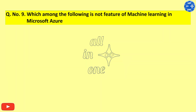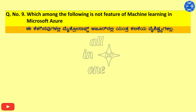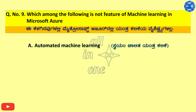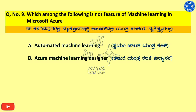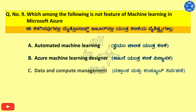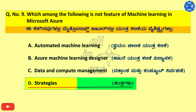Q9. Which among the following is not a feature of machine learning in Microsoft Azure? Options: A. Automated Machine Learning, B. Azure Machine Learning Designer, C. Data and Compute Management, D. Strategies. Right answer is D. Strategies.